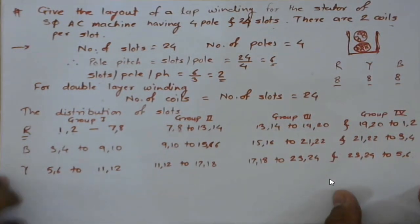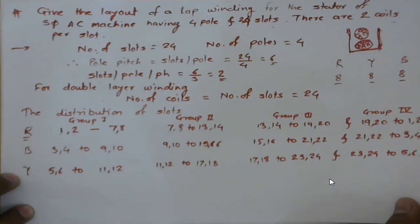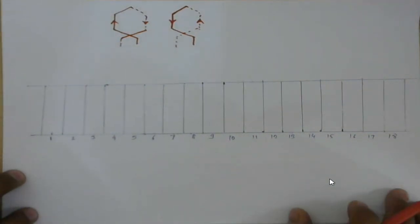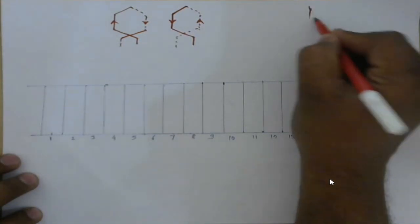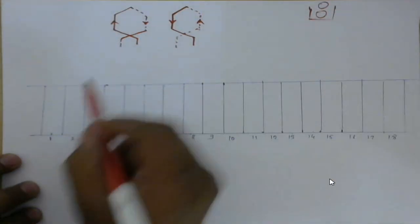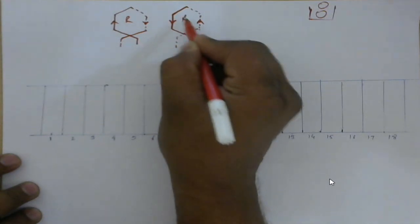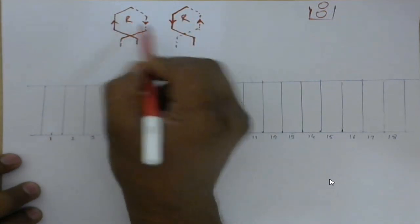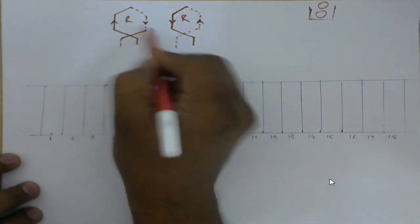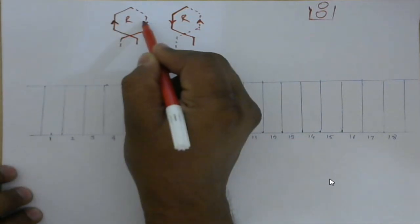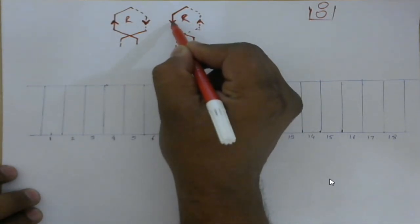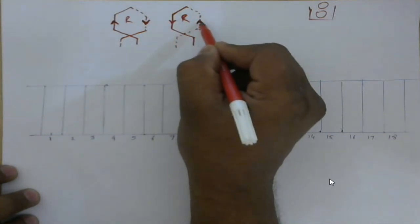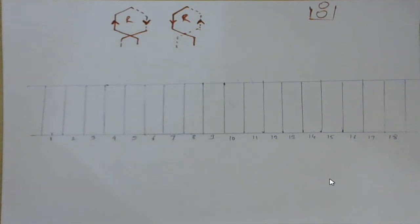We previously discussed how to form poles and the basics. Now let's see how to place coils. Each slot contains two coil sides. For each phase, there is one difference to observe: in one coil type, coil side 1 has current flowing upward and coil side 2 downward. In the other coil type, coil side 1 has current flowing downward and coil side 2 upward. The reason will become clear as we place the double layer winding.